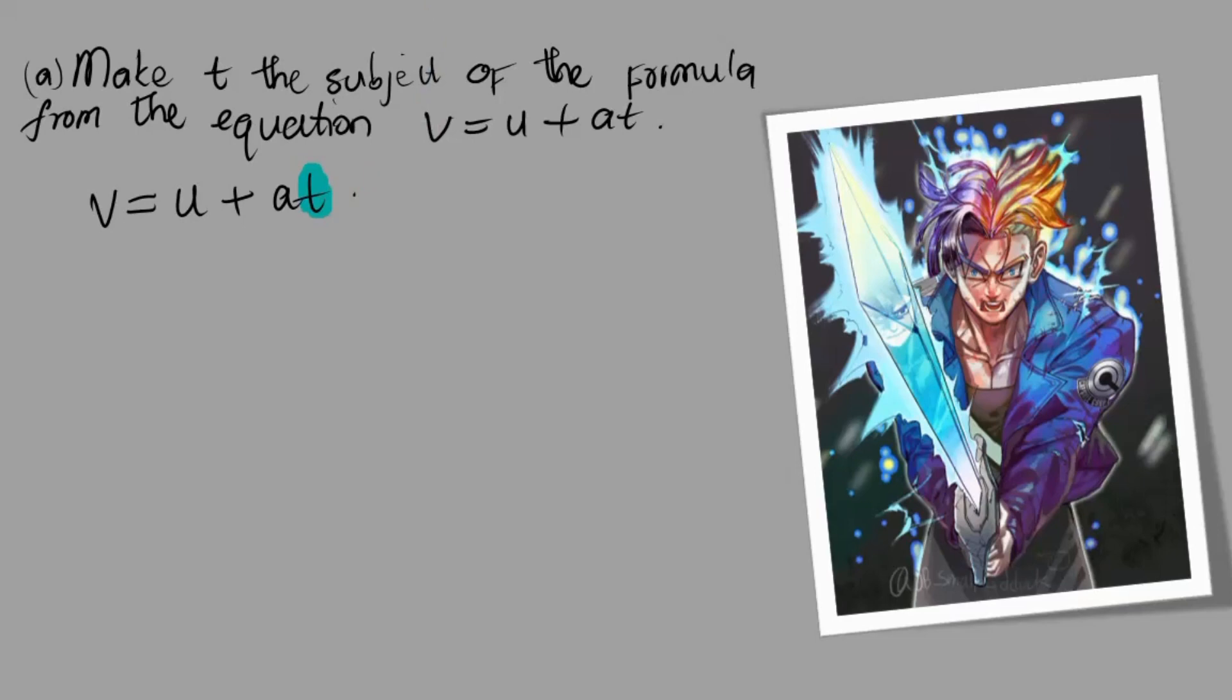I'm supposed to isolate t from everything else. t is attached to a by multiplication and to u by addition. Additions and subtractions are easier to remove than multiplications and divisions, always remember that. We move the addition first, moving u to the other side.